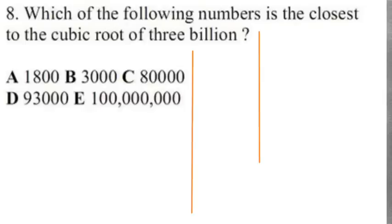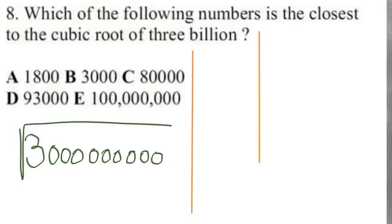Basically the question says, which of the following number is the closest to the cubic root of 3 billion? So what I'm looking for is something close to the cubic root of 3 billion. 3 billion is 3 with 9 zeros next to it. There you go, 3 billion. I want to find the cubic root of this number.